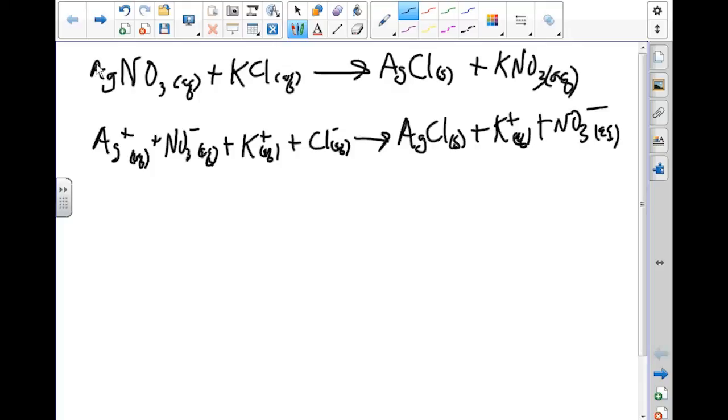The next thing we want to do is look at our spectator ions, or our ions that aren't involved in making the solid. If we look at our equation here, we see that we have our K on both sides of the equation, and our NO₃ ions. These are going to be our spectator ions, not involved in the net ionic equation.